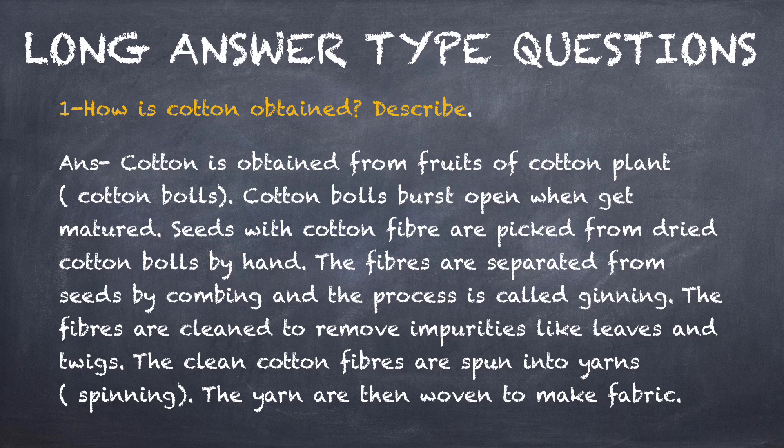The fibers are separated from the seed by combing, and this process is called ginning. The fibers are cleaned to remove impurities like leaves and twigs — twigs are the very thin and dry stem of a plant. The clean cotton fibers are then spun into yarn, a process known as spinning. The yarns are then woven to make fabric.